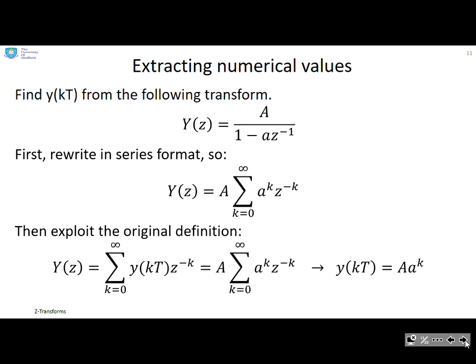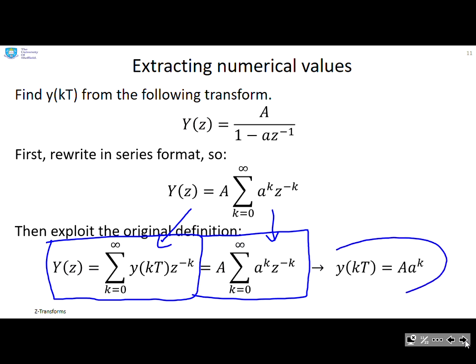I also know that the original definition for a Z-transform expressed it as a series. All I need to do now is match these two series, the definition and the series that I've got. And by matching those two, you can see straight away that y(kT) is capital A times small a to the power k. This is how we're going to extract numerical values in general. We're going to exploit this original definition and write our transform as a series.